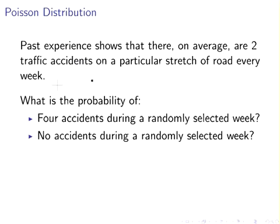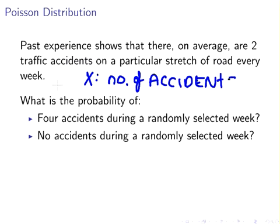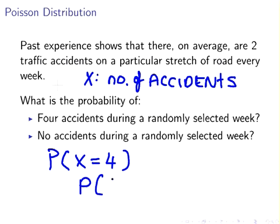Here X is going to be number of accidents and we're interested in the probability of X equal to 4 and the probability of X equal to 0. Just take a moment there to see how what I've just written at the bottom matches to the two questions that were being asked.